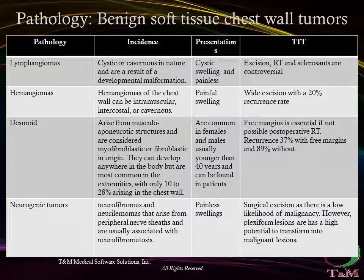The reported 5-year probability of developing a local recurrence for desmoid tumors is 37%, with an 89% rate in patients who had positive margins at the time of resection. Neurogenic tumors of the chest wall include neurofibromas and neurilemmomas that arise from peripheral nerve sheaths and are usually associated with neurofibromatosis. Surgical excision is usually only recommended for cosmetic reasons for cutaneous lesions, as there is a low likelihood of malignancy. Plexiform lesions are associated with nerve roots and have a high potential to transform into malignant lesions, so those increasing in size should be completely excised.